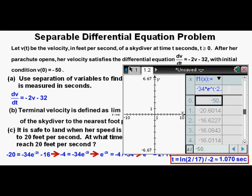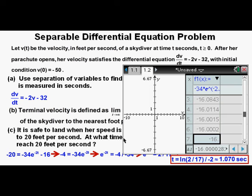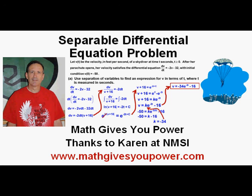As a matter of curiosity, let's put our equation for velocity into the calculator and check the table view. We see our initial velocity at our initial condition of negative 50 feet per second, which verifies our answer in Part A. We also see our speed at 1 second of about 20.6 feet per second, meaning that very soon thereafter the speed will reach 20 feet per second, confirming Part C. Going down to 4 seconds, the speed gets very close to 16 feet per second — our terminal velocity — and at 7 seconds the calculator rounds to negative 16 feet per second. I hope that working this problem has been helpful. This has been a separable differential equation problem, and thanks again to Karen at National Math and Science Initiative.